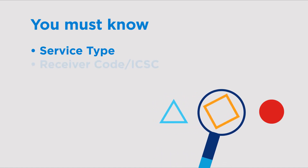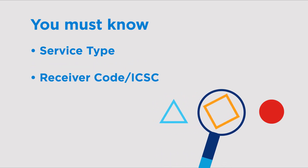You also need to know the ICSE or receiver code of the circuit. If your circuit is meet point, then you need to include all the ICSEs on the route of your order, not just on initiation. You can find this information on the install PON if you have it available.